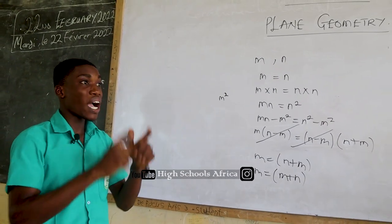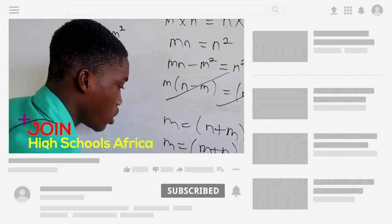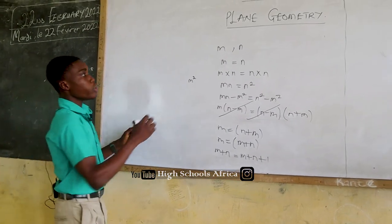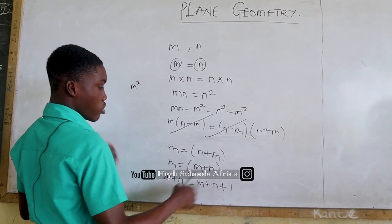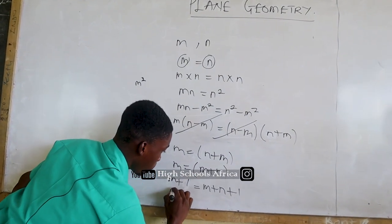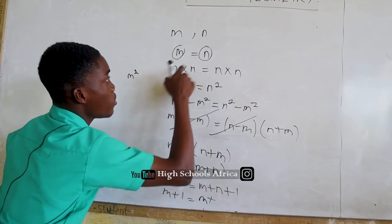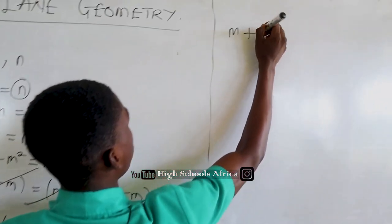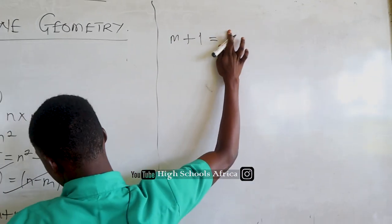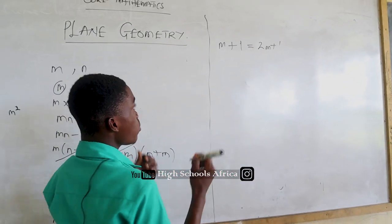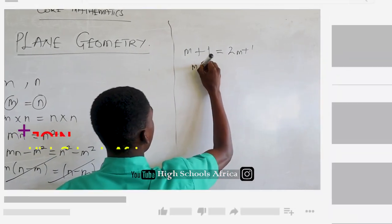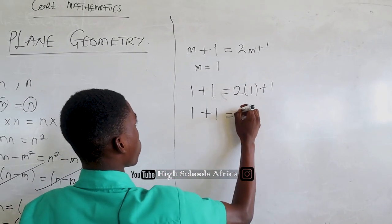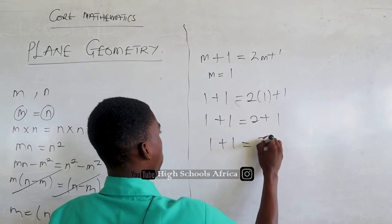The next thing is to add one to both sides: M plus 1 is equal to M plus N plus 1. But we know that M is equal to N, so we put M in place of N, which gives us M plus 1 is equal to 2M plus 1. We then assume M is equal to 1, so we have 1 plus 1 is equal to 2 times 1 plus 1, which gives us 1 plus 1 is equal to 2 plus 1, and therefore 1 plus 1 is equal to 3. Done.